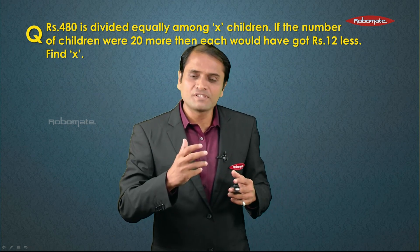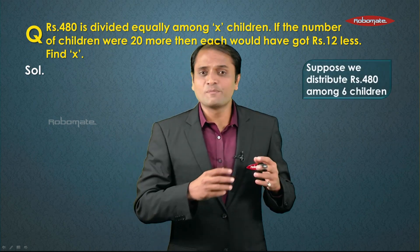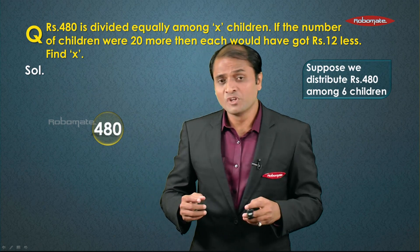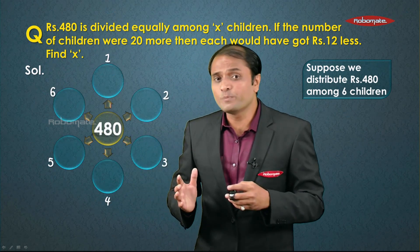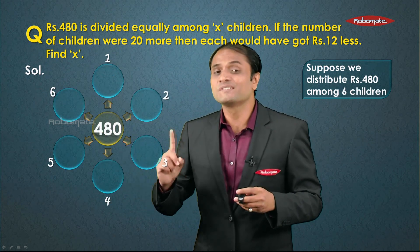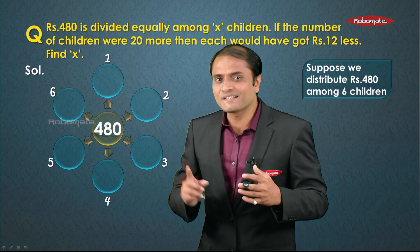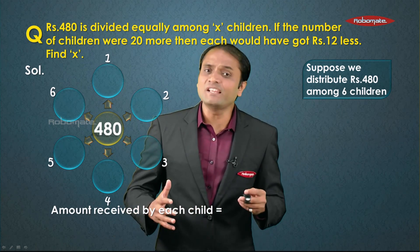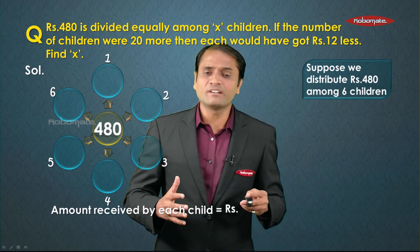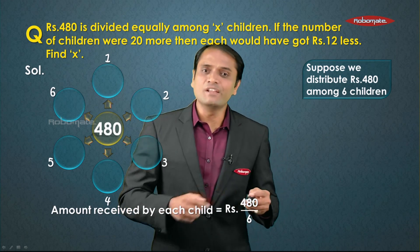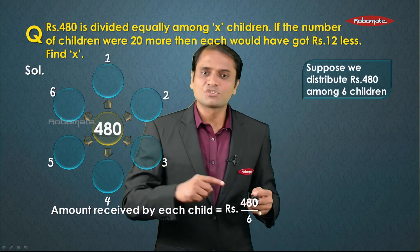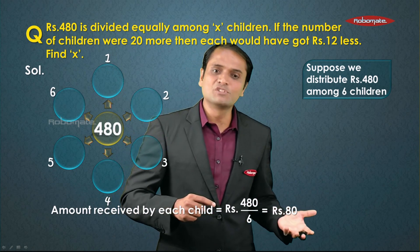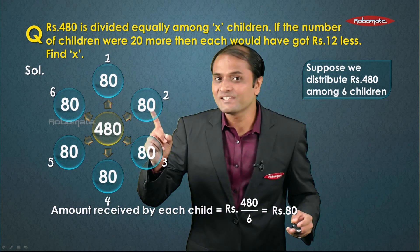To understand the solution, first understand a simple concept. Suppose I divide rupees 480 equally among six children — this amount is divided into six equal parts. The amount received by each child is rupees 480 divided by the number of parts, so 480 upon 6 equals rupees 80. Each child receives rupees 80.